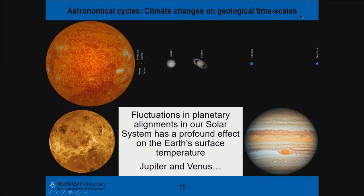Climate does change on geological time scales. Why? It's all due to fluctuations in planetary alignments in our solar system, most notably Venus and Jupiter. Jupiter is the most massive planet, and Venus is our closest neighbour. The orbits of these particular planets do have a profound effect on Earth's surface temperature.